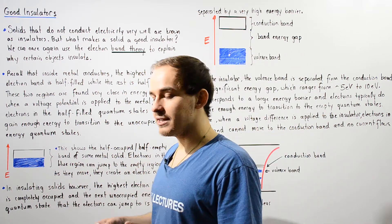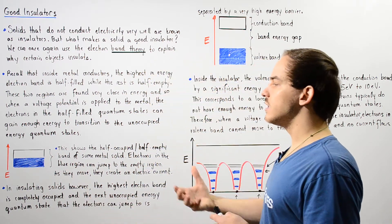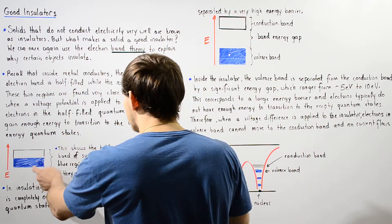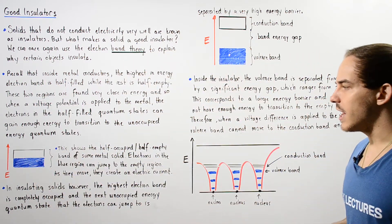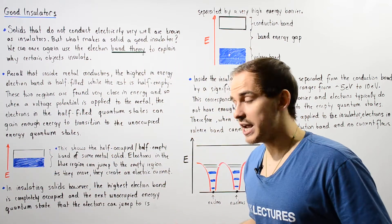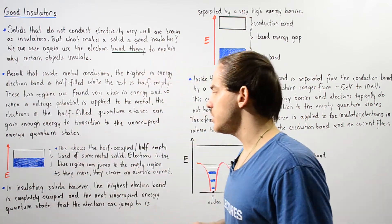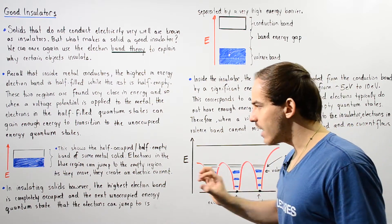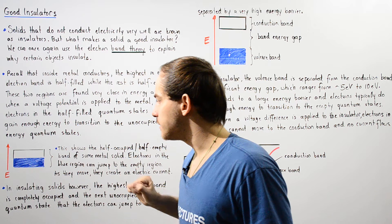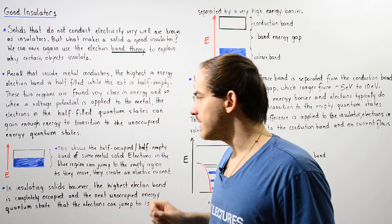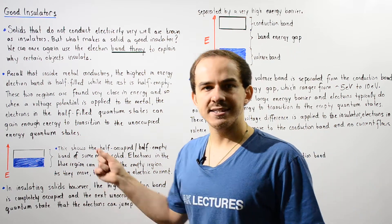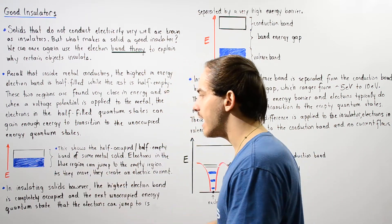And so our solid is said to be a good conductor of electricity. To see exactly what we mean, let's look at the following diagram. The y-axis is our energy — as we go higher, the energy increases. We have our highest-in-energy electron band, and only half of it actually contains our occupied quantum states in which the electrons are found.